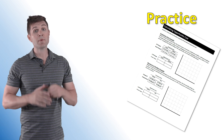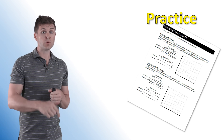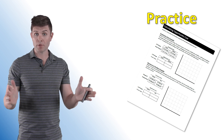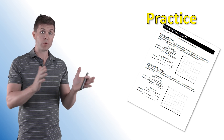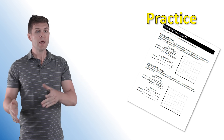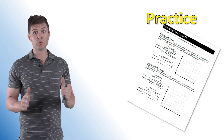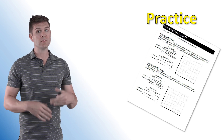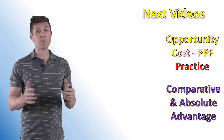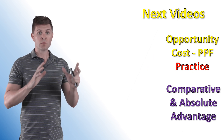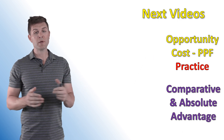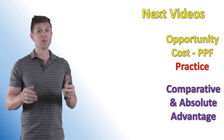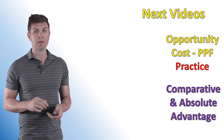Now let's take some time to practice what we just learned. In the description below there's a link to a worksheet — one example given production data using what we sacrifice divided by what we produce, and one with the resources-to-produce question using what we produce divided by what we sacrifice. Run through both, see how you do, then check out the follow-up video to go over the answers. Also make sure you check out the next video in this series: Comparative and Absolute Advantage. As always, thanks for watching — I'll see you next time.